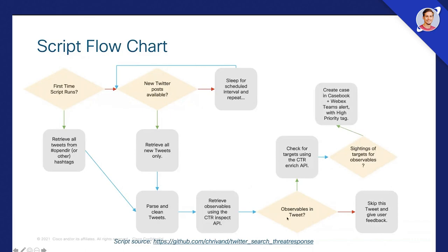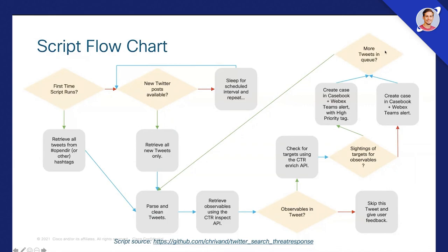It will then check: are there any observables? If so, we enrich them. When we actually find observables in the tweet and find that we have target sightings in our environment, this is interesting — it means an ethical hacker tweeted about a new domain name, and someone in your organization actually made a connection to that domain. We then create a case in Casebook in SecureX and send a WebEx Teams alert with a high-priority tag. If there are no target sightings, we still create a case and send a WebEx Teams alert but it likely requires less work. If there are more tweets in the queue, we process them; otherwise, it sleeps.